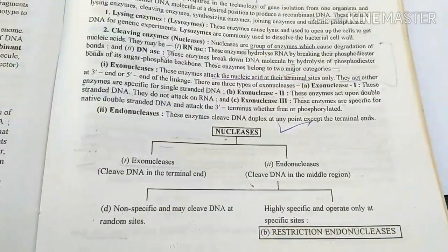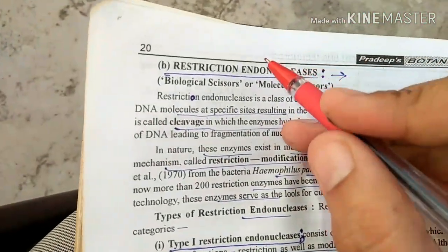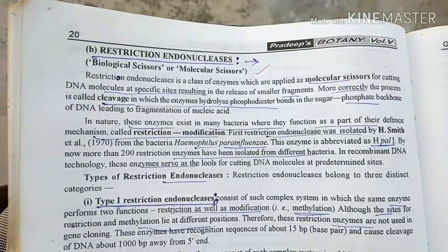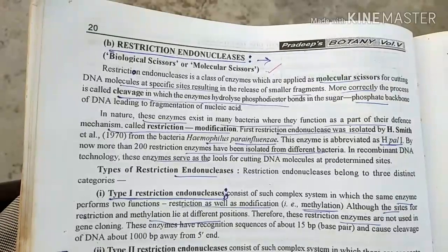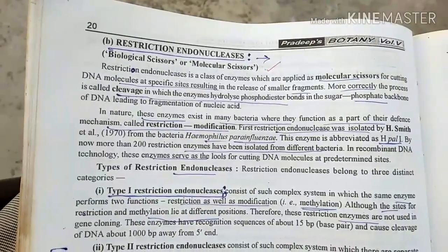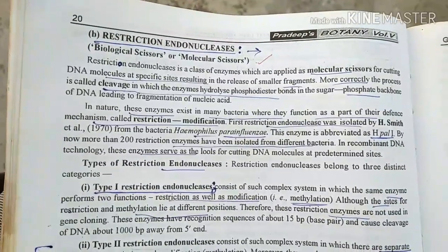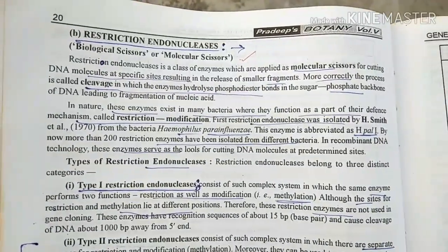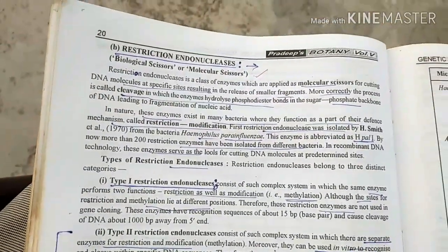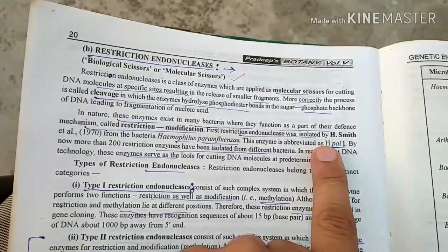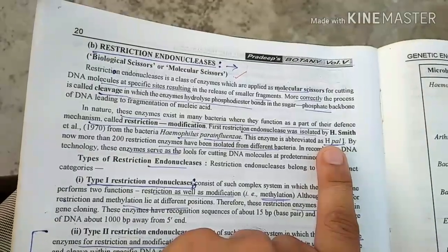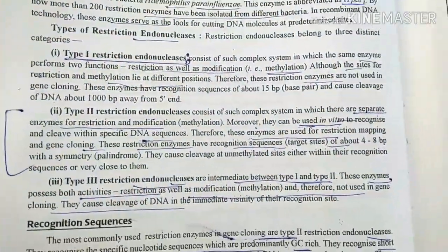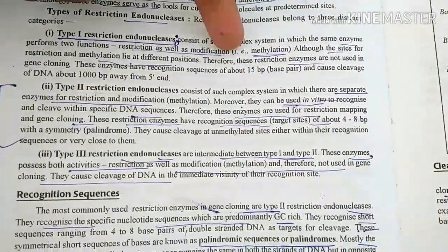This is a very important enzyme. Restriction endonuclease enzyme — students call it the molecular scissors. The restriction endonuclease enzyme is classified into type 1, 2, and 3.